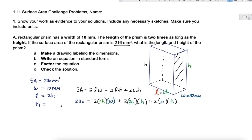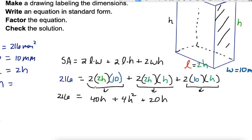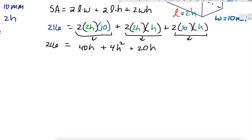So now I've set this whole thing up, let's go ahead and evaluate, simplify these expressions here. 2 times 2 times 10, we've got 40h, 2 times 2 times h times h, we have 4h squared, and then here we've got 20h. I'm going to zoom in here.